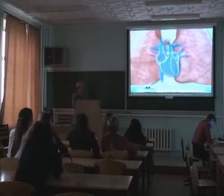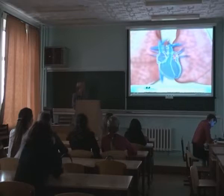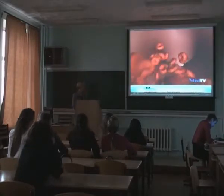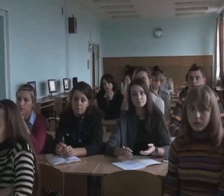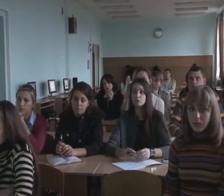They form larger vessels called veins. As the deoxygenated blood makes its way back through the heart and lungs, it picks up oxygen and nutrients. The heart then pumps the blood out through the arteries, and the cycle is repeated.